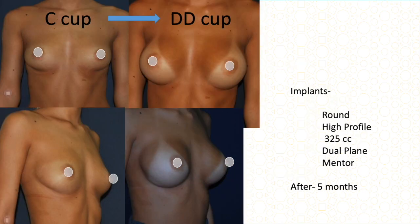Another thinner patient already at C cup who wanted a full D or double D. I used 325 cc high-profile implant in dual plane, and this is the result after five months.